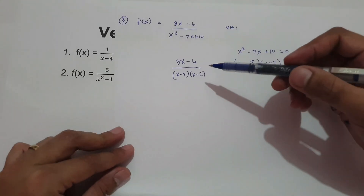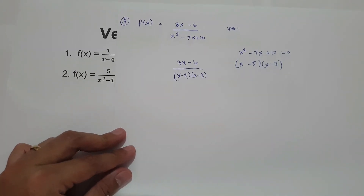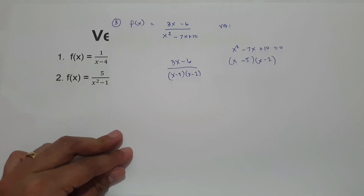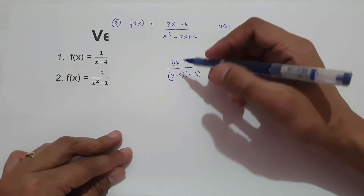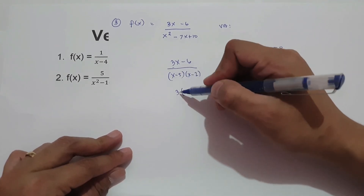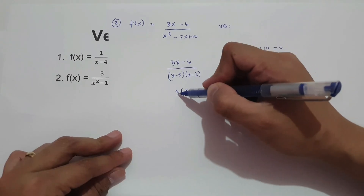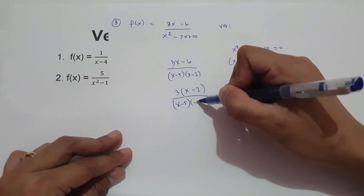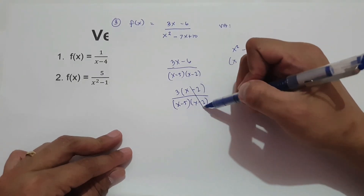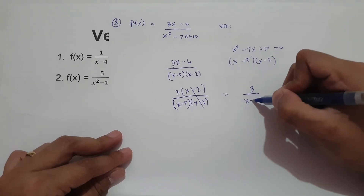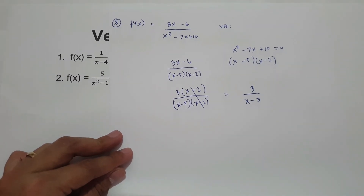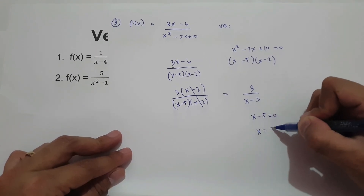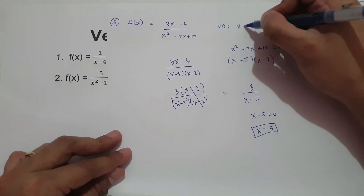Notice that our numerator is factorable. The greatest common factor of 3 and 6 is 3, so 3x minus 6 factors as 3 times x minus 2. We now have 3 times x minus 2 over x minus 5 times x minus 2. We can cancel x minus 2, leaving 3 over x minus 5. To find the vertical asymptote, we equate x minus 5 to zero, giving x equals 5. Therefore, our vertical asymptote is 5.